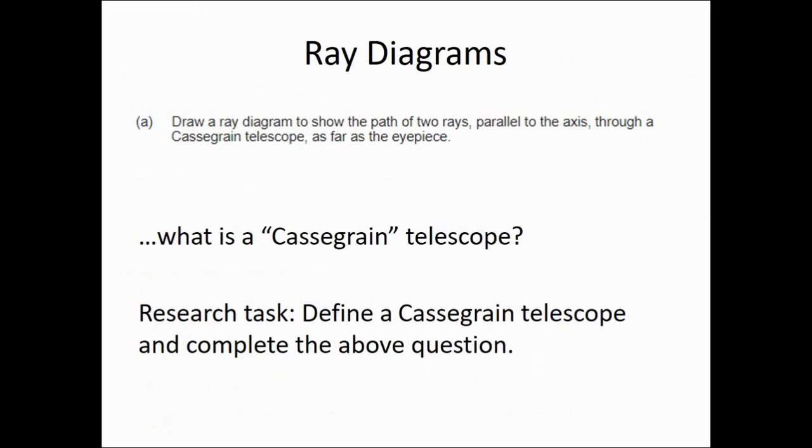Okay, it's time to have a look at the other type of telescope we might be expected to draw a ray diagram for. The refracting telescope in normal adjustment is the first one. This is a Cassegrain Telescope. Which begs the question, what's a Cassegrain Telescope? Well, I'll give you straight away, it's a type of reflecting telescope. It uses mirrors instead of lenses to focus the light. However, I'm going to let you take the lead on this one. Please find a definition for the Cassegrain Telescope and try to complete the question above. You should pause the video now.